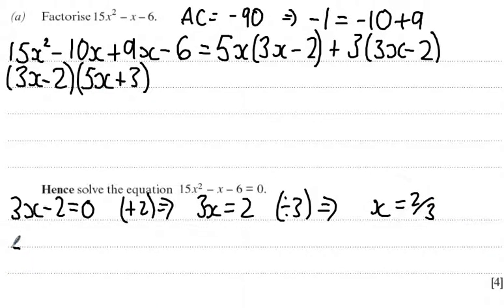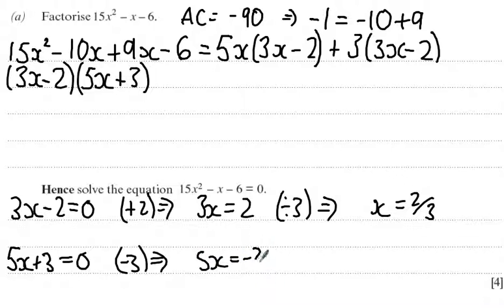And to repeat the same process for the other bracket, 5x plus 3 equals 0, and minus 3 from both sides. So I get 5x equals minus 3. And I'm going to divide by 5 both sides so that I get x equals minus 3 over 5.